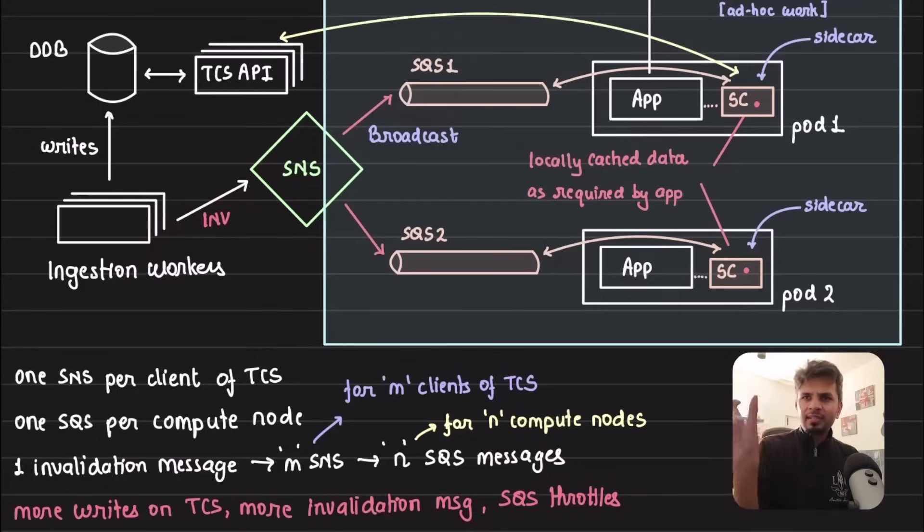One SQS per compute node. Now imagine when an invalidation happens - this invalidation message is also an event, some payload that you need to invalidate. This message is sent once to SNS. What if for this same key there are multiple SNS topics that are interested? Imagine there are M SNS topics to which the invalidation message is sent, and each SNS topic has on average N SQS subscribed to it. M into N is the total fanout that happens, which is humongous.